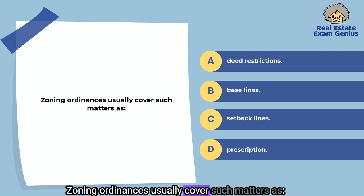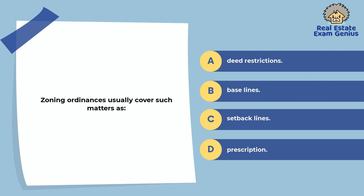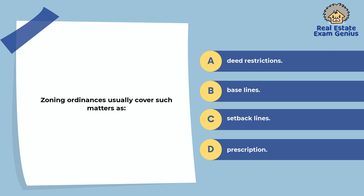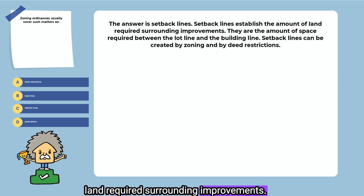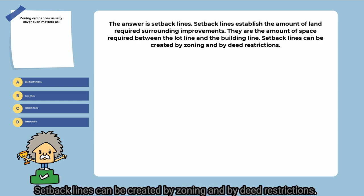Zoning ordinances usually cover such matters as: deed restrictions, baselines, setback lines, or prescription. The answer is setback lines. Setback lines establish the amount of land required surrounding improvements. They are the amount of space required between the lot line and the building line. Setback lines can be created by zoning and by deed restrictions.